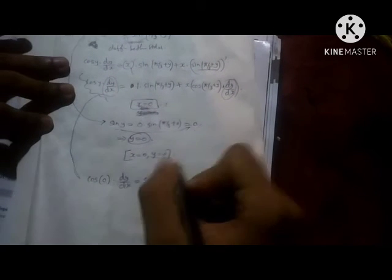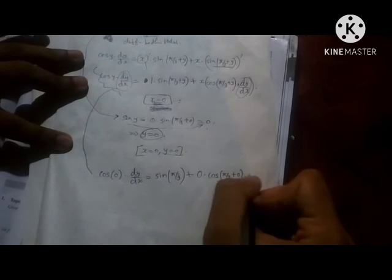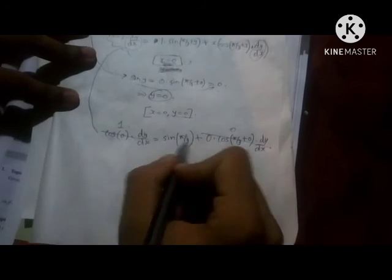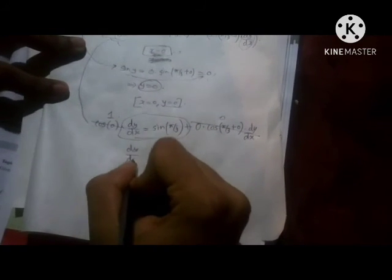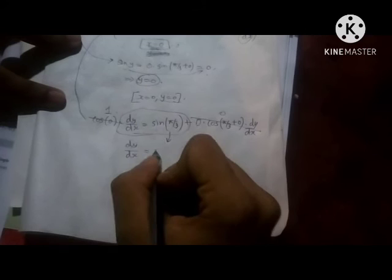Substituting x = 0, y = 0: cos 0 into dy by dx equals sin of 5 by 3 plus 0, plus 0 into cos(5 by 3) into dy by dx. Since cos 0 equals 1, dy by dx equals sin of 5 by 3, which equals sin 60°, which equals root 3 by 2. That is the tangent slope.